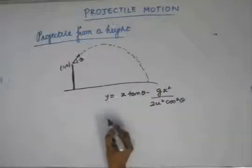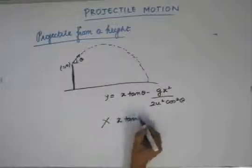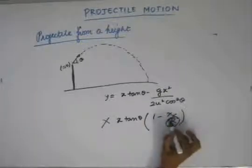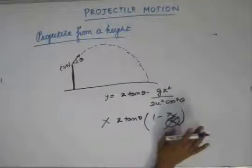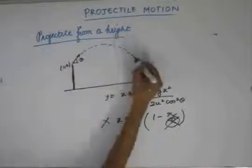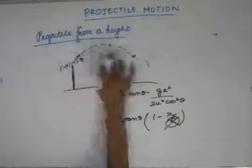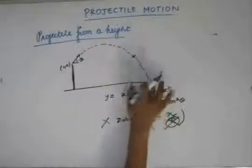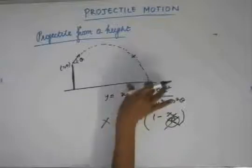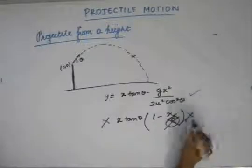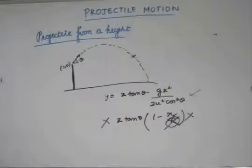But remember, this is not equal to x tan θ (1 minus x/R) in this case, because the range of the particle is not equal to u² sin 2θ / g. That formula would have been valid only if we had considered the time till the particle was at the same vertical height. Now, the particle has some extra time to fall to the ground and in that extra time it will cover some extra horizontal distance. So, the range of the particle is different in this case. To find the range, we have to go to our basics.